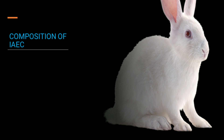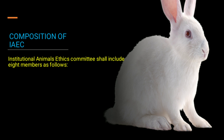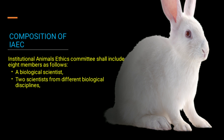Now, talking about the composition or constitution of IAEC. So basically, IAEC includes 8 members. The first one is the biological scientist. Then, two scientists from different biological disciplines. So three members so far: one biological scientist plus two scientists from different biological disciplines.